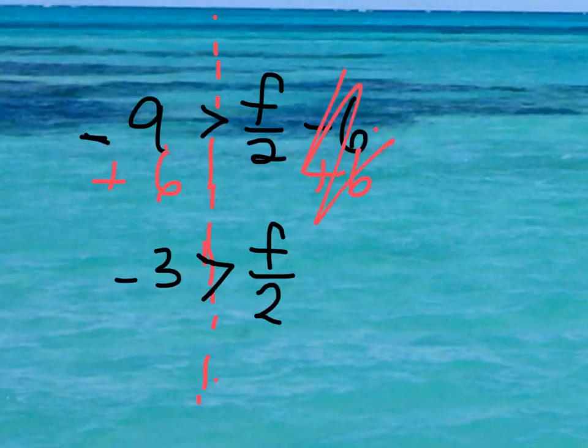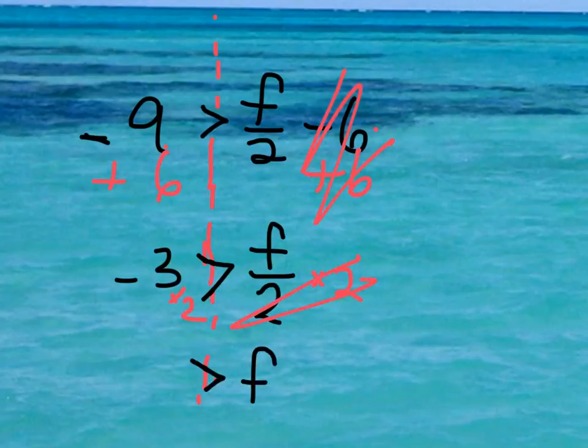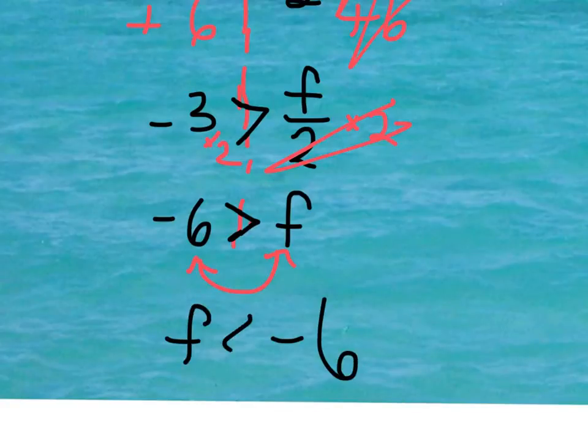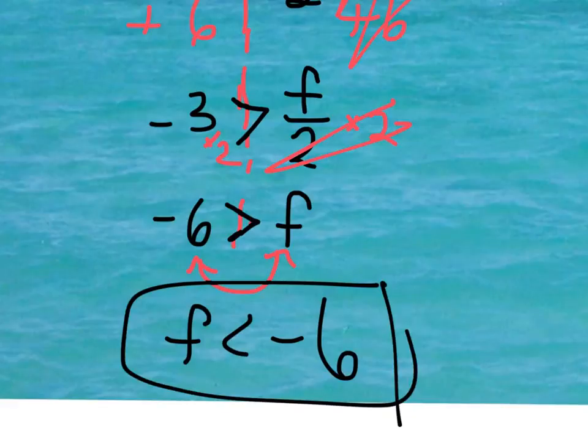And negative 9 plus 6 is negative 3. Now to finish off, to get rid of this divide by 2, I'm going to multiply both sides by 2. And we'd be left with f greater than negative 6. But as you should know by now, we always want to have an inequality where the variable is on the left side. So what we're going to do is switch these babies around, which also switches the direction of the symbol. So instead of being greater than, it's going to be less than. And that would be our answer to the question.